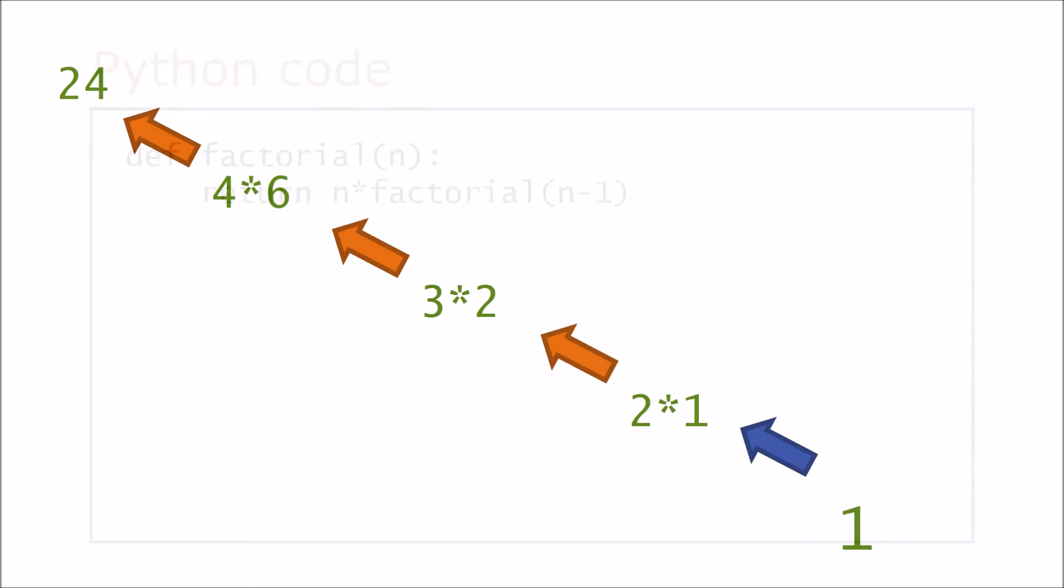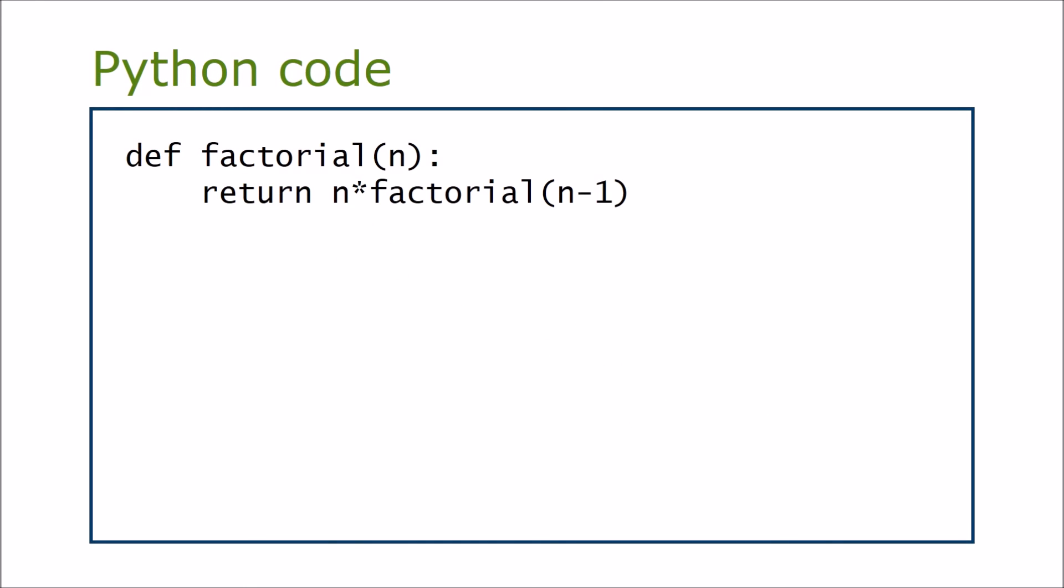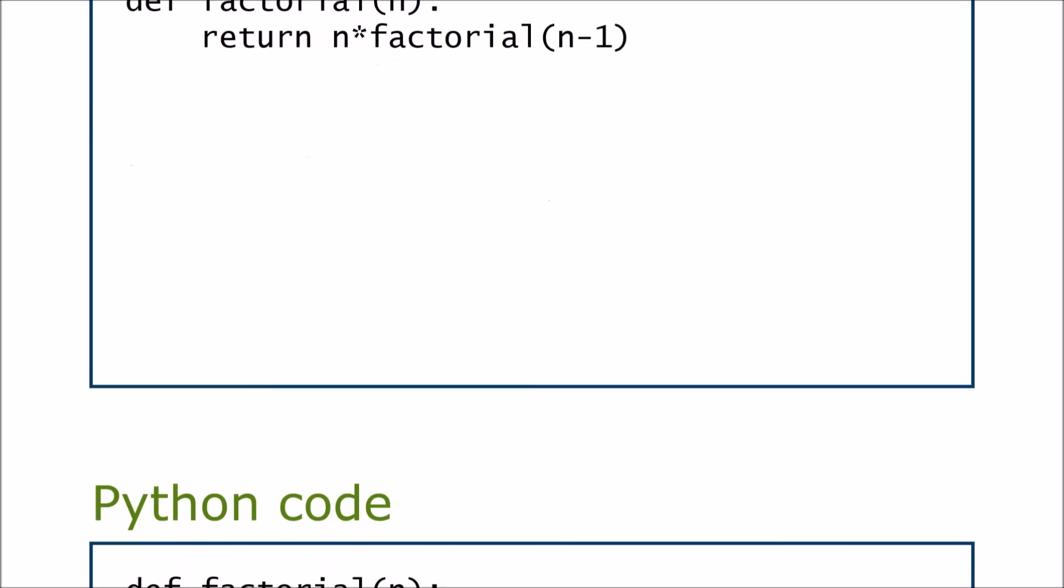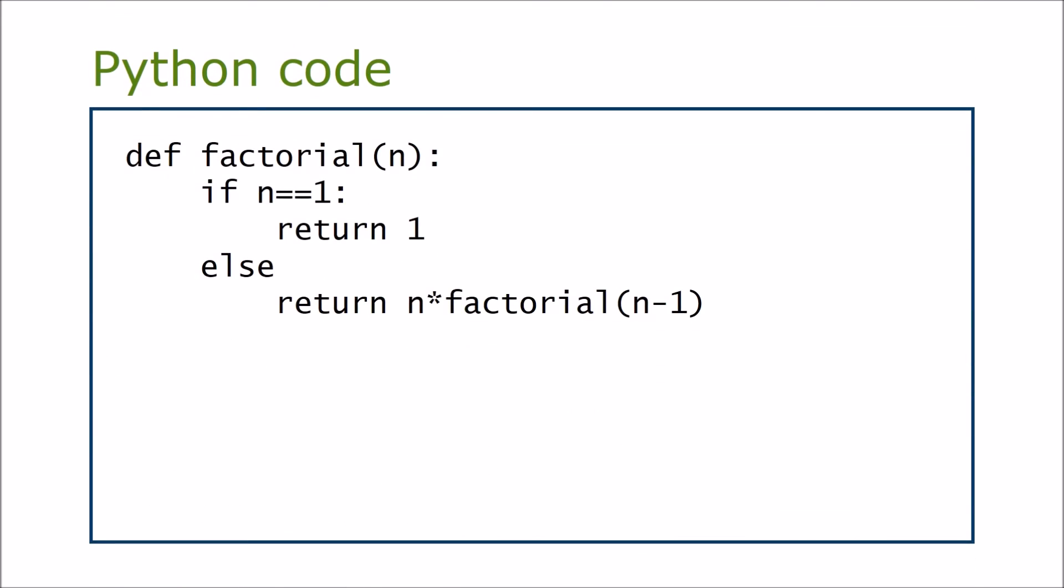Now let's look again at our factorial function. Something important is missing. If we call the function with n equals 1, it will try to calculate the factorial of 0 and so on forever. We need to make a special case for n equals 1 and simply return 1. This is the base case.